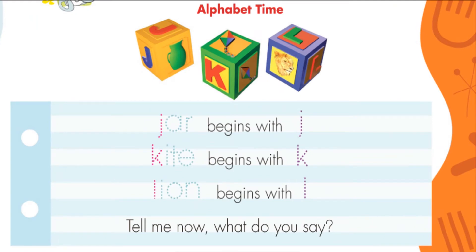Ok, my little kids, we are going to start with alphabet time. Vamos a revisar qué encontramos en estos daditos. We have here letter J. Tenemos ahora letter K. En el tercer dadito tenemos la letra L. J, K, L.